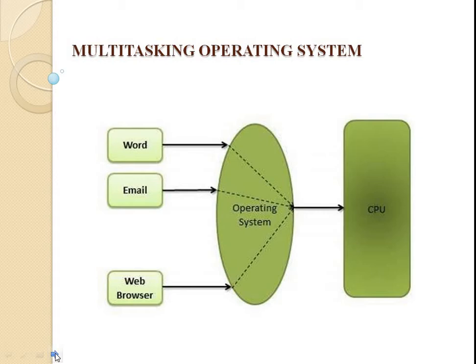The next type of operating system is the multitasking operating system. Multitasking is when multiple jobs are executed by the CPU simultaneously by switching between them. Switching occurs so frequently that the user may interact with each program while it is running. A multitasking operating system is also known as a time-sharing system. This operating system was developed to provide interactive use of a computer system at a reasonable cost. A time-shared operating system uses the concept of CPU scheduling and multiprogramming to provide each user with a small portion of the shared CPU.